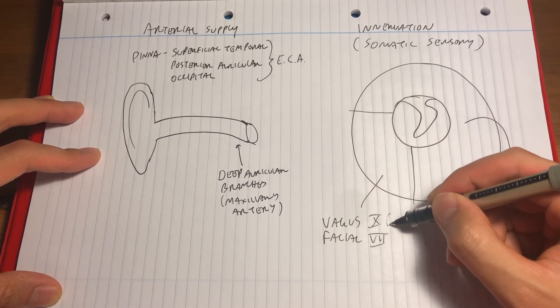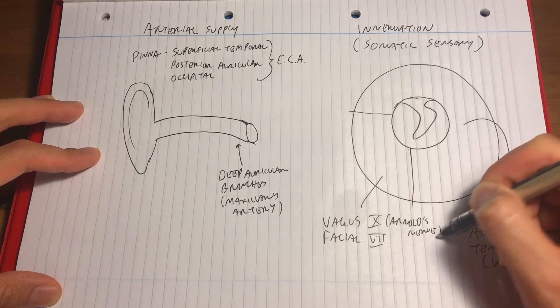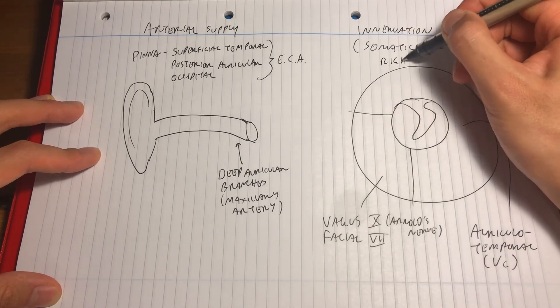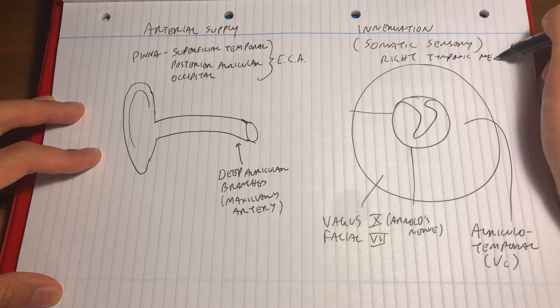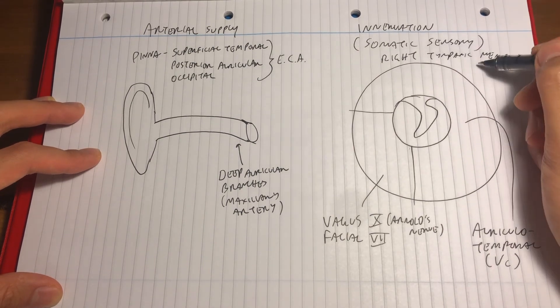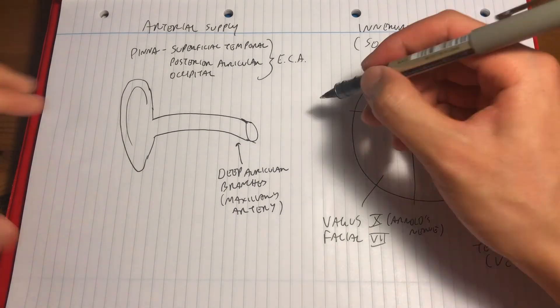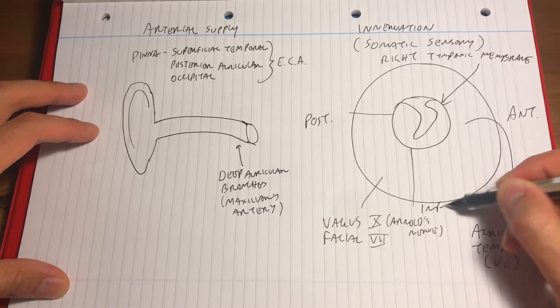For this reason, sometimes when cleaning out the ears or putting instruments in the ear, some people can develop a cough, and that's because the vagus nerve is also responsible for the cough reflex.